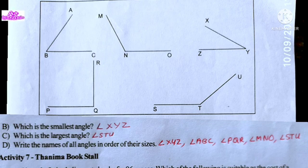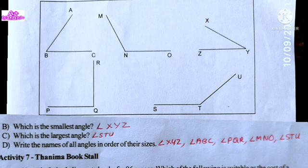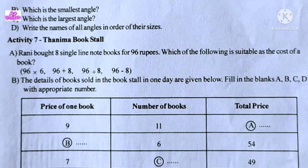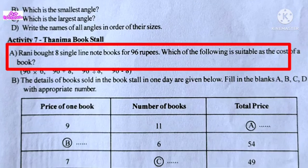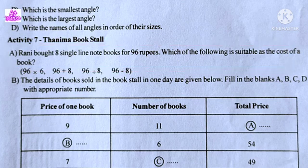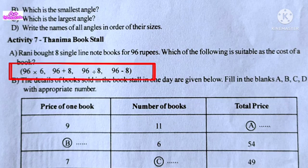Rani bought 8 single-line notebooks for 96 rupees. Which of the following is suitable as the cost of one book?